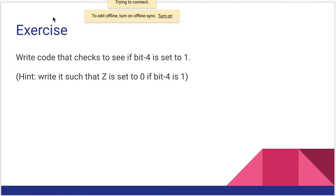Pause for a minute — I want you to try to write this exercise. Work through it and see if you can write the code that will check to see if bit 4 of the accumulator is set to one. The hint is: write it so that the Z flag is set to zero if bit 4 is set to one.